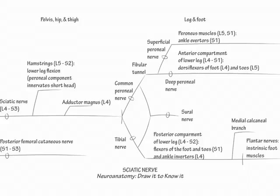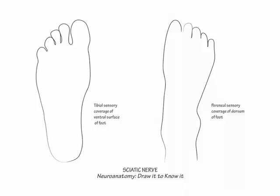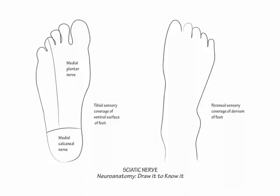Now let's sketch the sensory coverage of the feet. Trace your feet and label one as the dorsal surface and the other as the ventral surface. First, indicate the medial calcaneal nerve coverage to the heel. The plantar nerves provide sensory coverage to the rest of the bottom of the feet. Draw a line down the center of the fourth digit along the foot to the heel, indicating the medial plantar nerve covers the medial foot and the lateral plantar nerve covers the lateral foot.